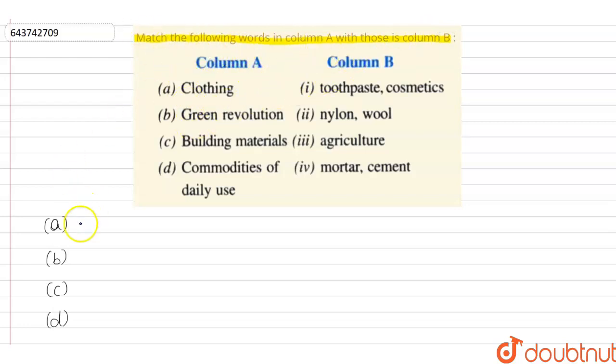The first one is clothing. So clothing is what we wear, it is made from nylon and wool. So the option will be second.